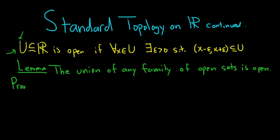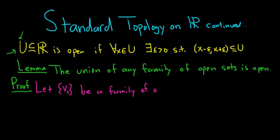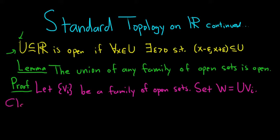Proof. We'll start by considering a family of open sets. Let V sub i, as i runs through some index set, be a family of open sets. Now we're going to consider the union of this family. Let W equal the union of the V_i's. The claim is that W is an open set.